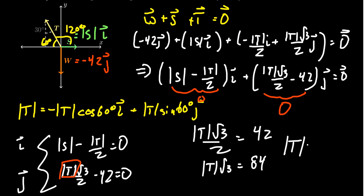Divide both sides by the square root of 3, and we see that the tension is equal to 84 over the square root of 3, which, of course, is approximately 48.5 pounds of force. And this agrees with what we got previously, for which you can verify.